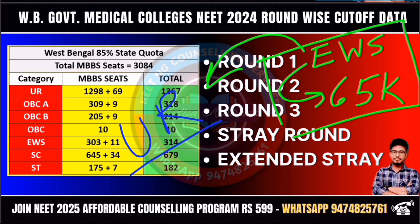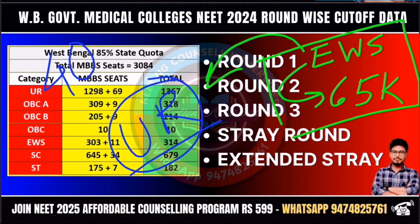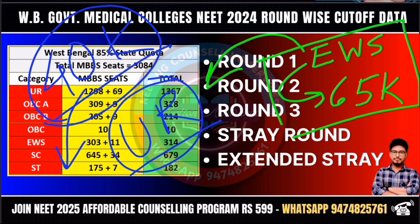If you look at the previous data, the West Bengal government medical college MBBS cut-off, the general category candidate cut-off is around 40,000 rank. When cut-off is low, you will see there is a huge impact on all India rank, but for West Bengal students the all India rank is around 50,000.